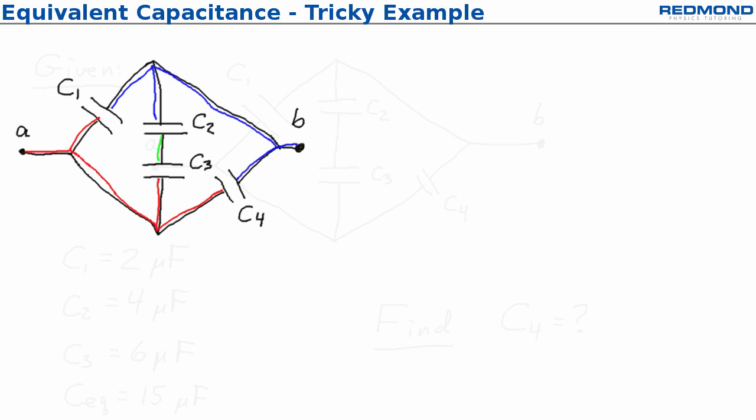So I have a red wire along the bottom and then touching C1, C3, and C4. A blue wire on the top touching C1, C2, and C4 and then I have a green wire between C2 and C3. And the advantage of doing that is that it makes some things really clear.